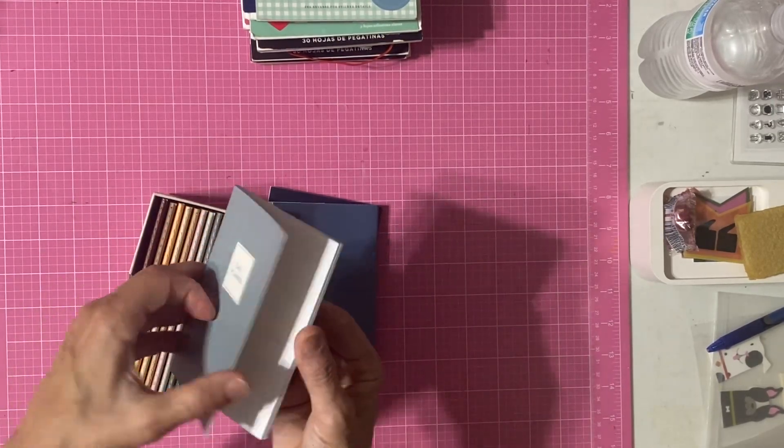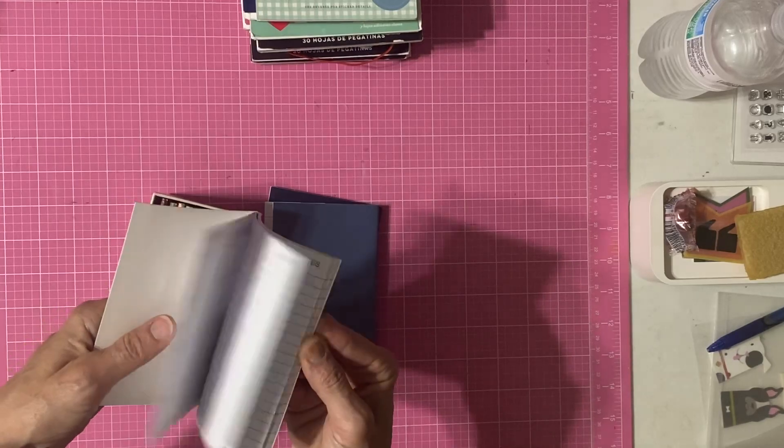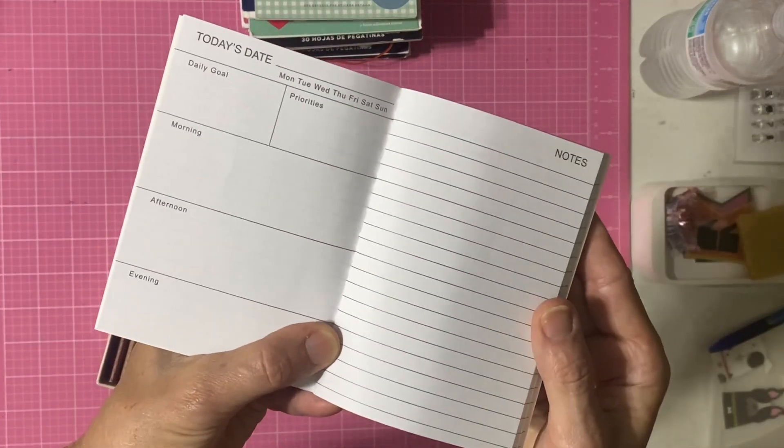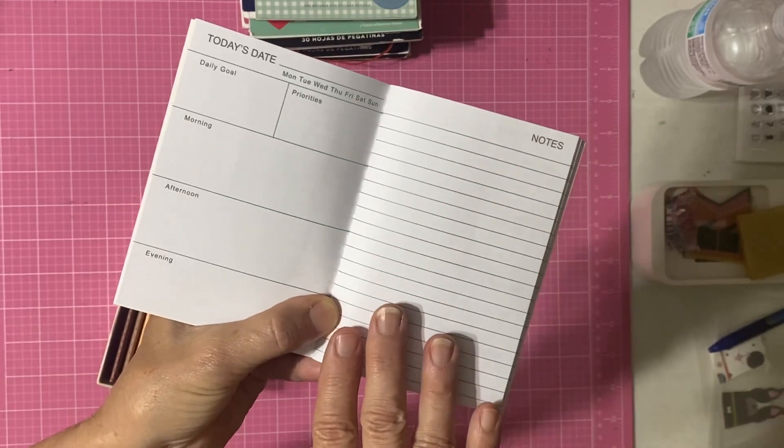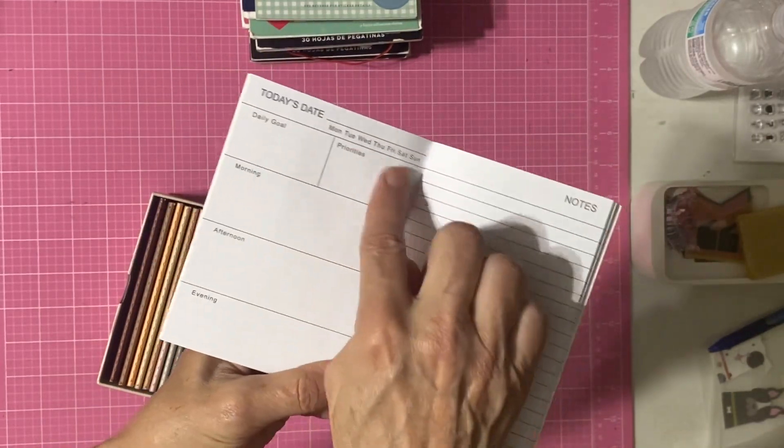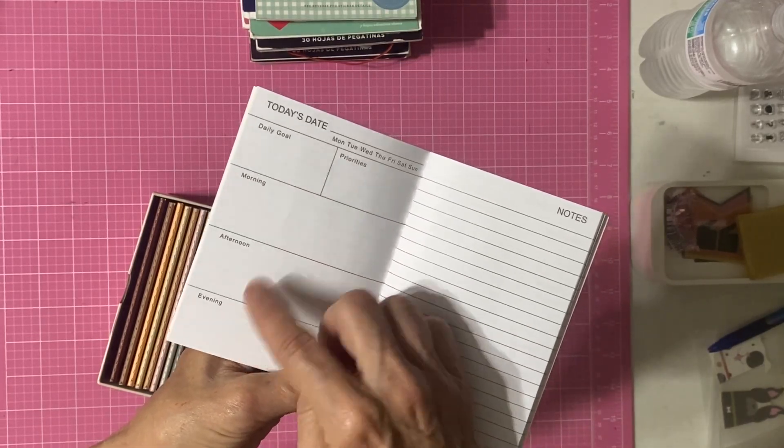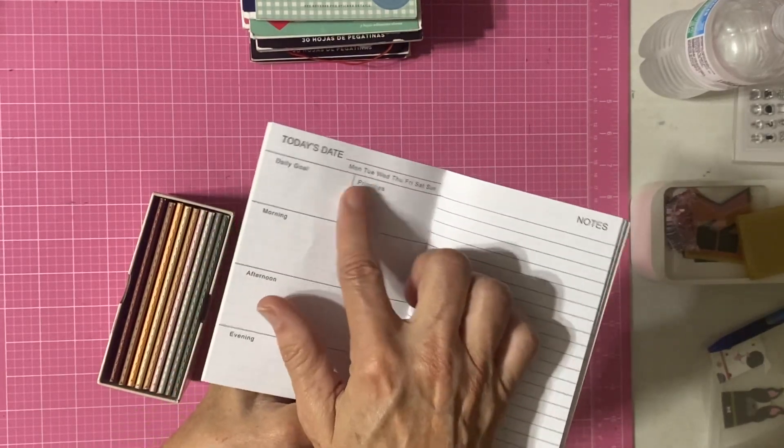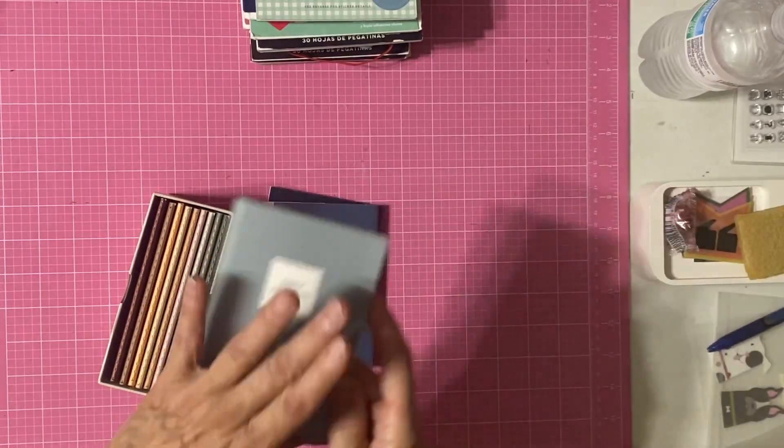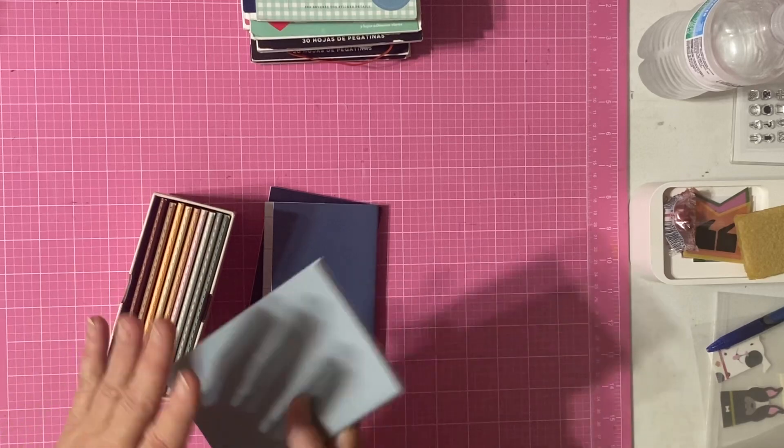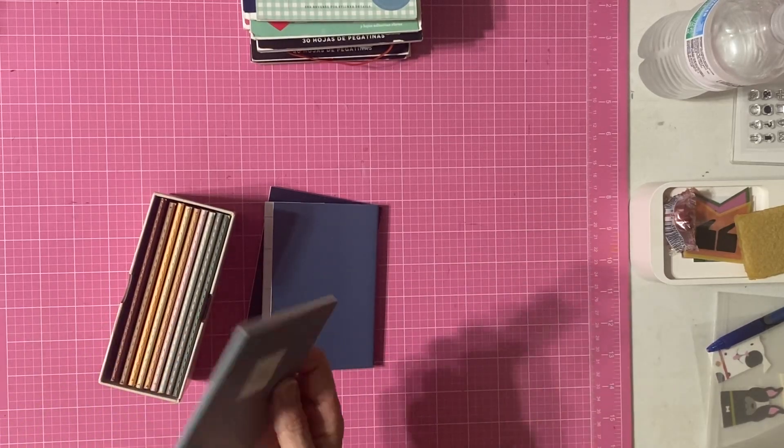They're really cute little daily planners. A little notes section, and then it's broken down into daily goals, priorities, morning, afternoon, evening, the day and the day of the week. I thought well that would be a really good way to see if it's something I would like.